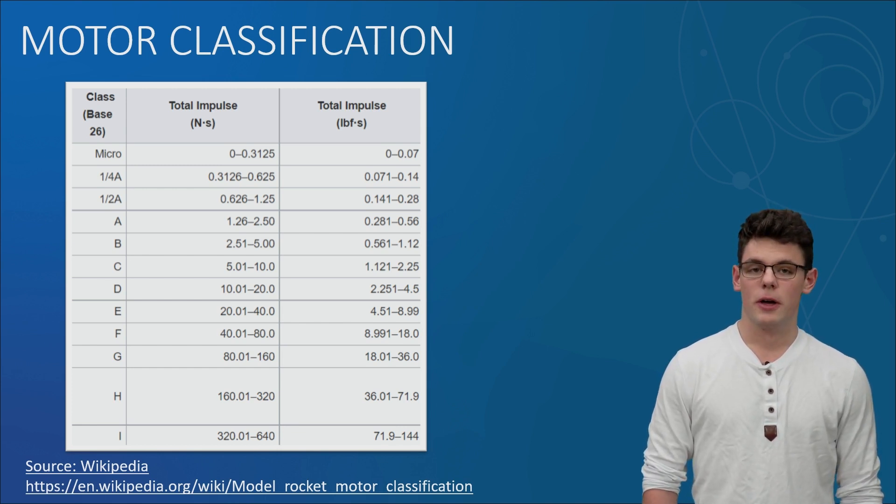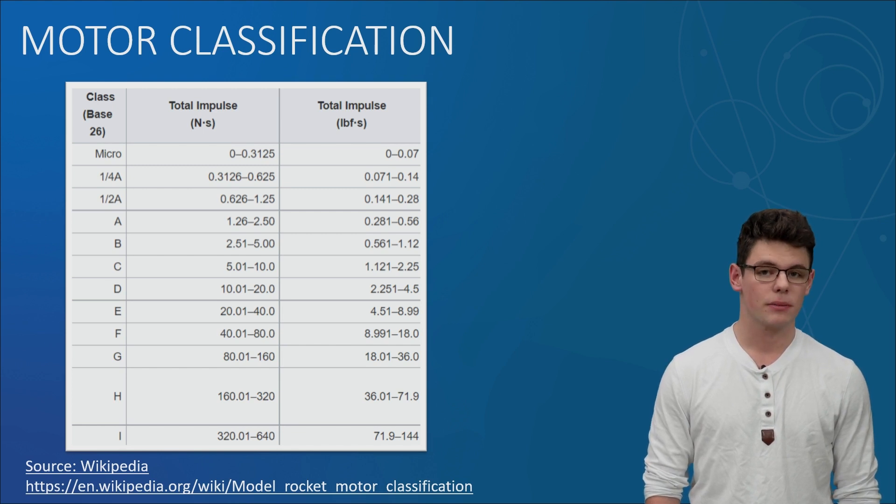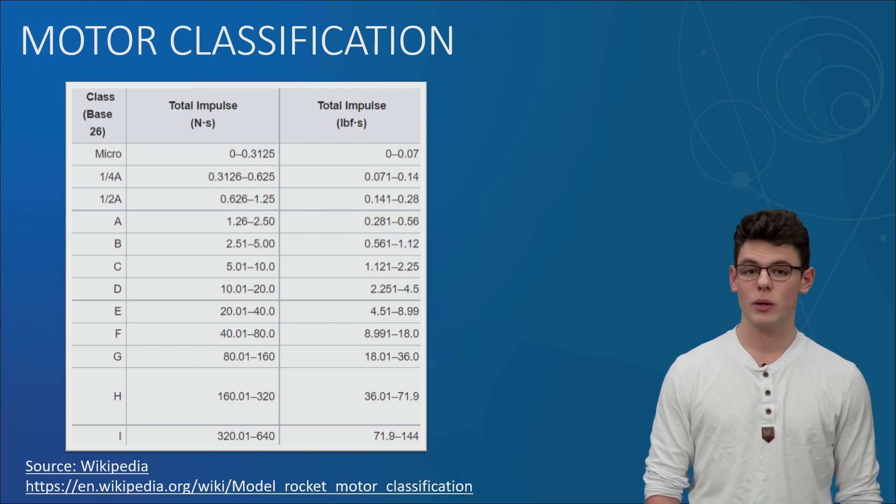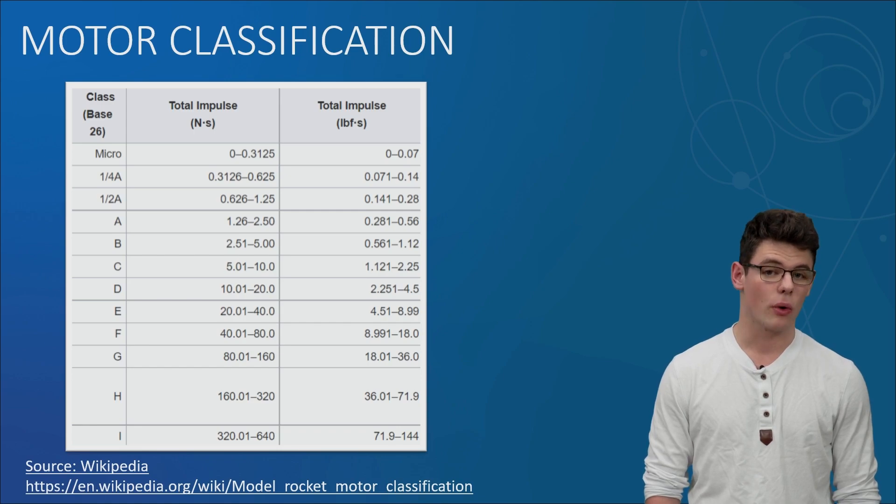Motors are classified by how much impulse they create, represented by letters. A higher letter in the alphabet, the more powerful the motor. Class A motors are used for simple, lightweight motors, while a Class C motor might be used for something larger, like our courier rocket.